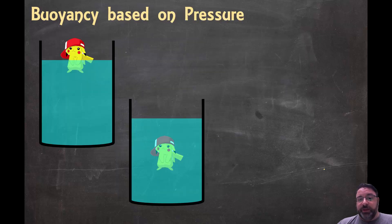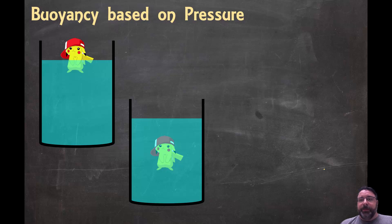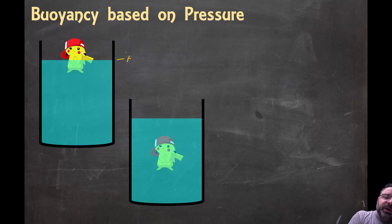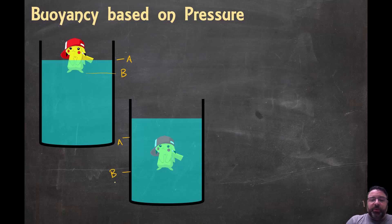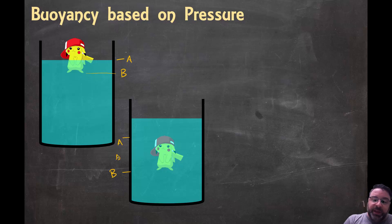We're going to look at our friend Pikachu again. We're going to look at two cases to see how it doesn't really matter whether you're completely submerged in liquid or partially submerged — our derivation should work fine for both. So let's say this is point A at the top and point B at the bottom, with a difference of delta H between the two.